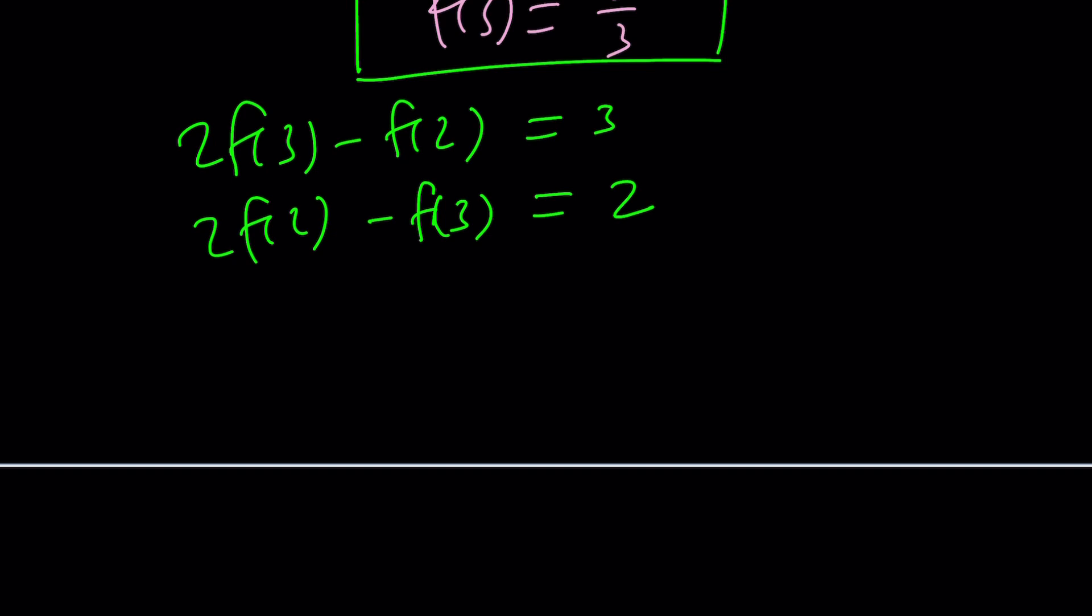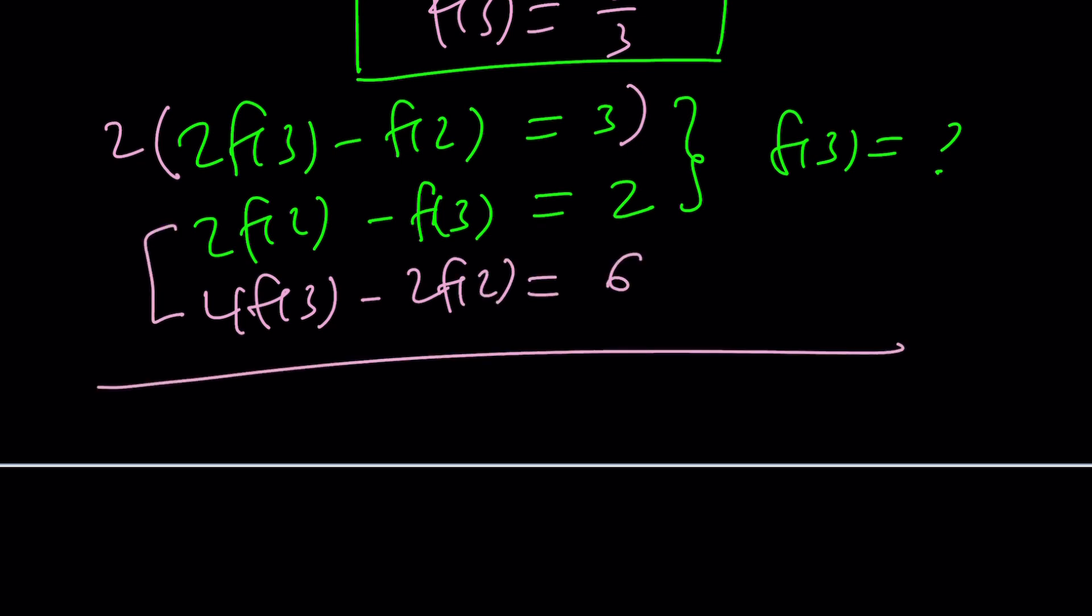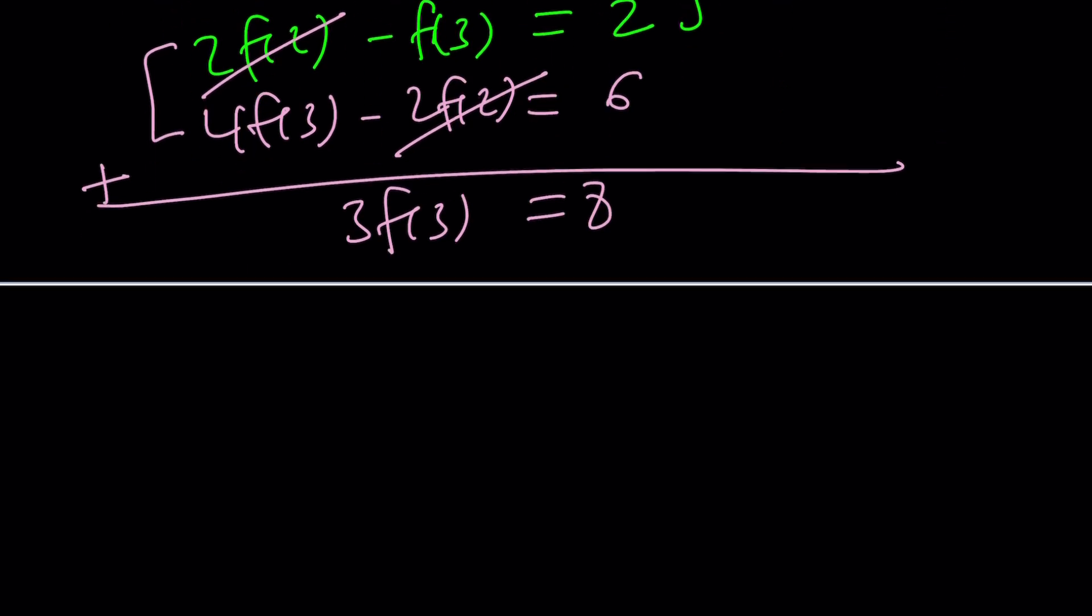Since we are looking for f of 3, we can go ahead and eliminate f of 2. To do that, I'm going to need to multiply the top equation by 2 everywhere. And that's going to give me 4f of 3 minus 2f of 2 equals 6. Now I'm going to consider these two equations. If you go ahead and add them up, 2f2 minus 2f2 is 0. That's going to cancel out. 4f of 3 plus 2f of 3 is 6f of 3.